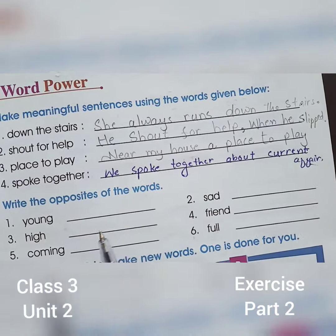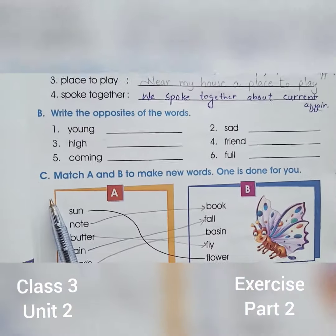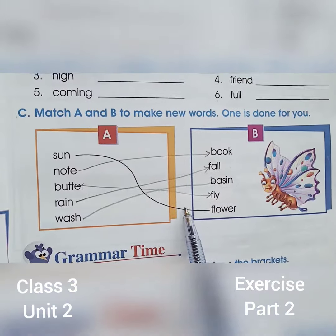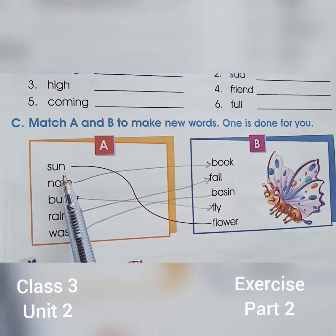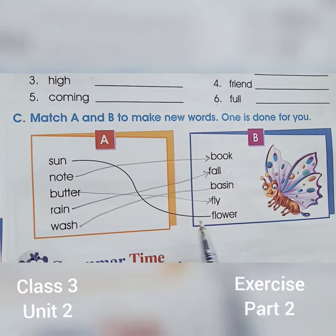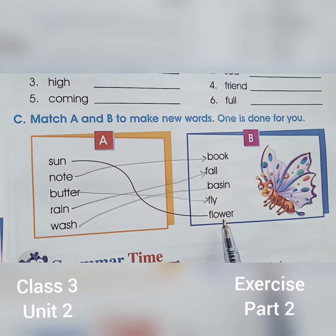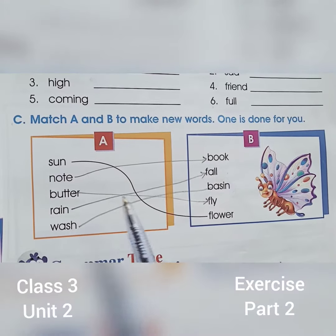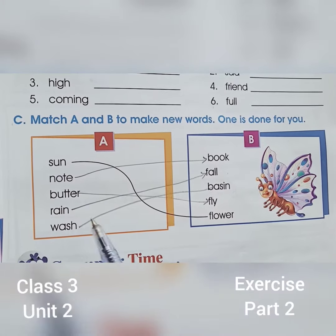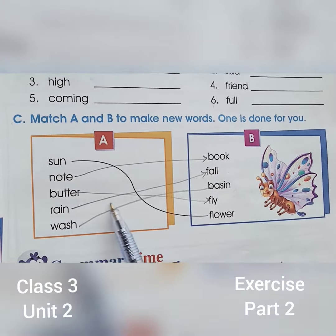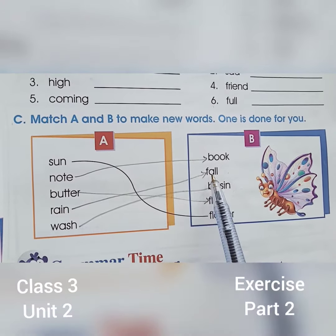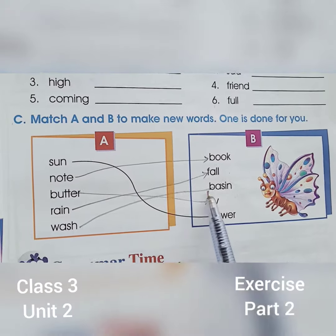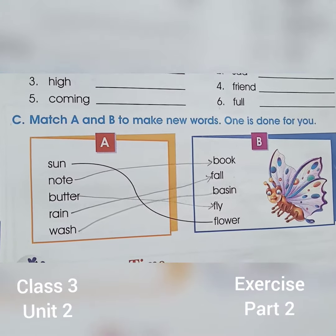इसके बाद इसी का C part, ये भी आपने कॉपी में solve करना है. Sun को किससे match कर देंगे? Flower, Note, Book, Butter, Fly, Rain, Fall, Wash, Basin. ठीक है?